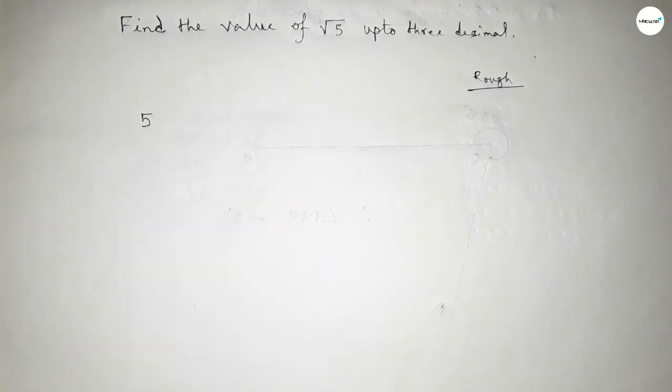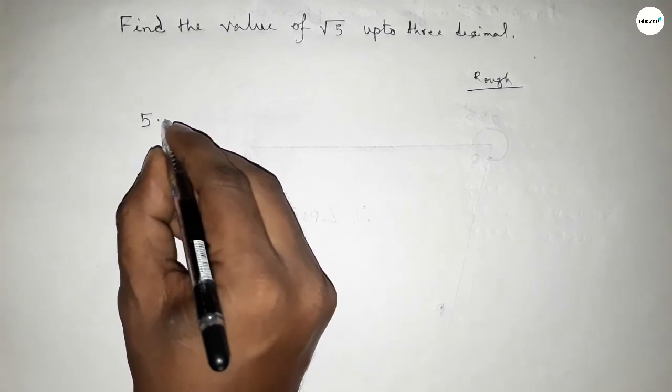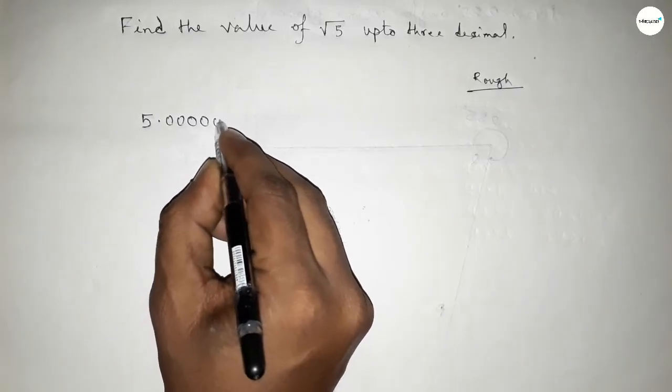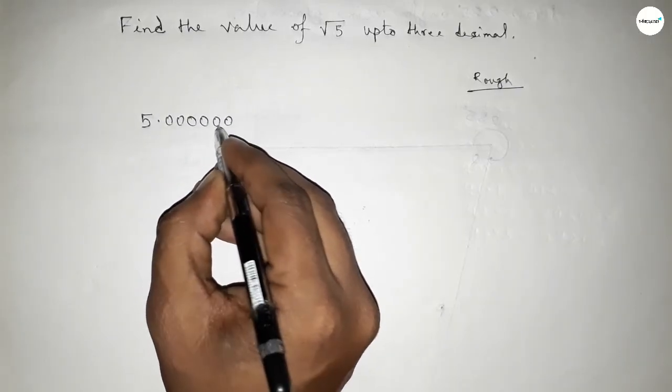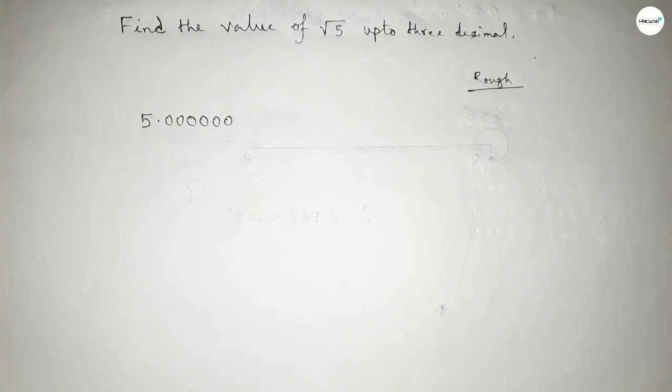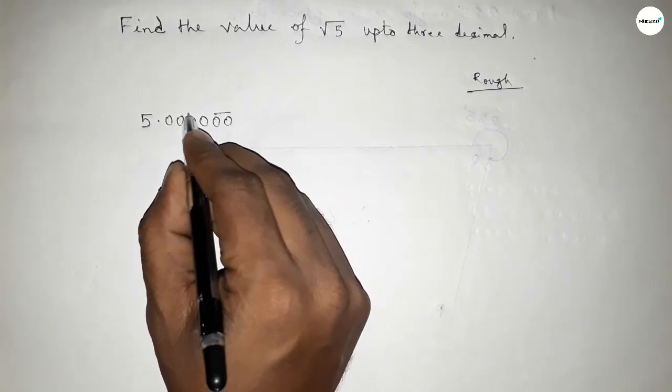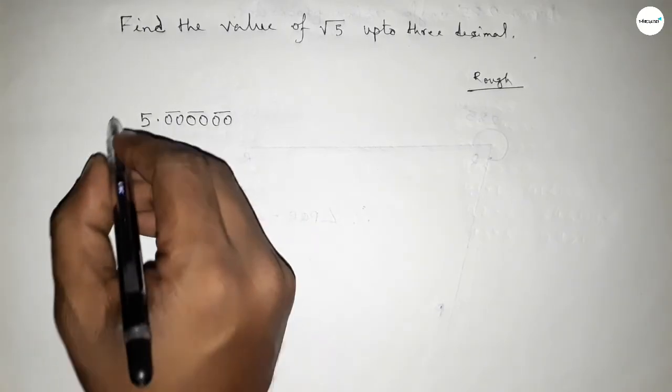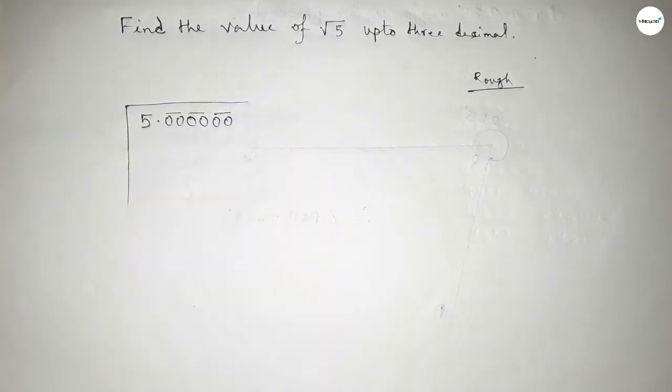Now write here 5. So for three decimal we have to take here point and taking after point taking six zeros. And making them as pair, so we got three pairs of zero.